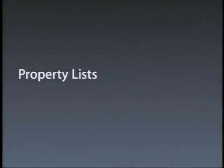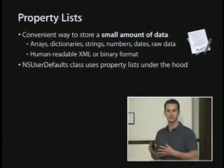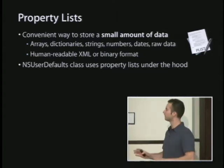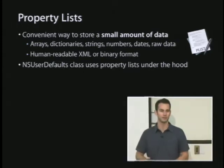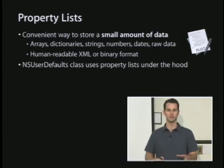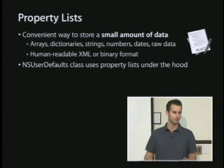Property lists are a convenient way to store relatively small amounts of data with very little effort. They can basically only contain the Cocoa types: arrays, dictionaries, strings, numbers, dates, and raw data — that's NSDictionary, NSArray, NSNumbers. You can't add your own objects, UI views, or other types of objects.